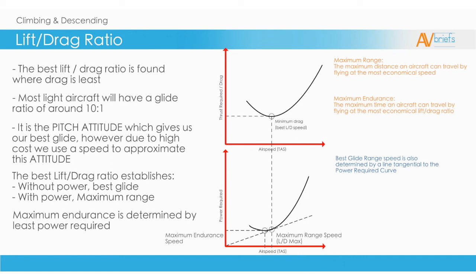Maximum range travels the furthest distance. Maximum endurance stays in the air longest. You can see on the lower graph that to stay in the air the longest time will require less power and therefore less fuel being consumed. Hence, it can stay in the air for longer.